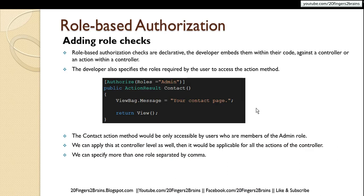Role-based authorization checks are declarative — the developer embeds them within their code against a controller or an action within a controller, and specifies the role required by the user to access the action method. In the screenshot you can see the Contact action method is decorated with the Authorize attribute and we have specified the admin role against the roles property. The Contact action method would only be accessible by users who are a member of the admin role.